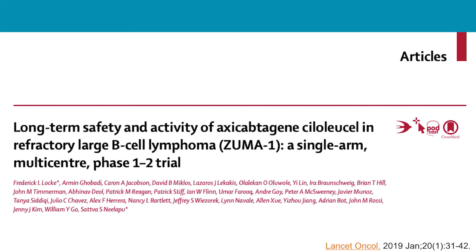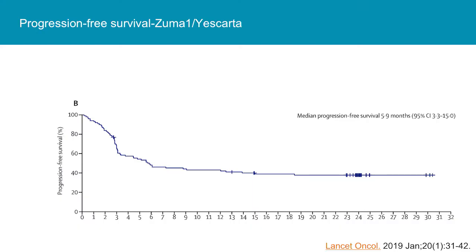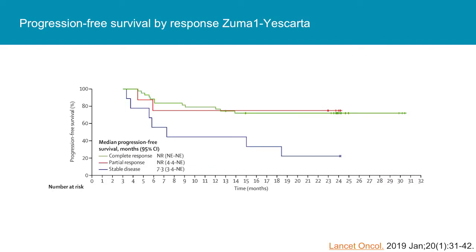We now have some mature data in CAR T cell therapy for several diseases. The ZUMA-1 trial looked at Yescarta in relapsed/refractory diffuse large B cell lymphoma in about 100 patients with multiple subtypes of aggressive lymphomas. Overall response rates were over 80% with complete response rates initially on the order of 60%. At over 30 months, these responses seem to be durable with no drop-off in the survival curve, which is really exciting for patients refractory to all other therapies.